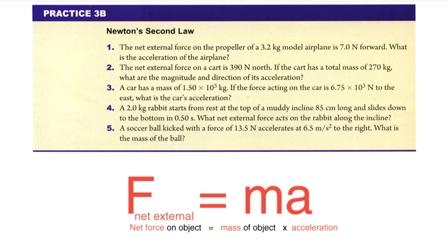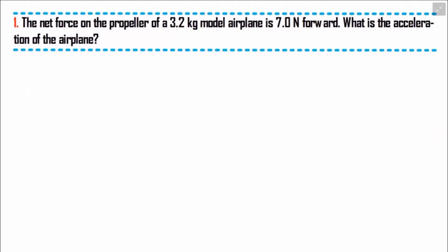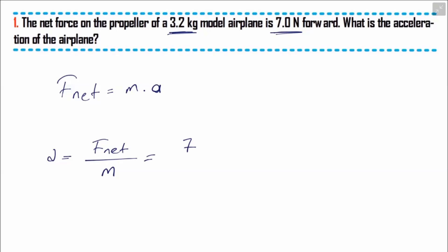Welcome everyone. In this question: the net force on a propeller of a 3.2 kilogram model airplane is 7 newton forward. What is the acceleration of the airplane? Using acceleration equals F_net over mass: 7 divided by 3.2 equals 2.2 meters per second squared. Thanks for listening.